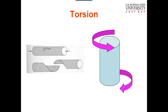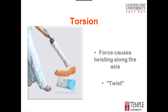Torsion is a twisting along the axis. Hopefully none of you have suffered a spiral fracture of your tibia, but this is how it would occur — it's a twisting. Sometimes when people are on skis and the skis rotate, it creates a torsional load along the long axis of your tibia. Here it is demonstrated with a mop — you're twisting the tissue.